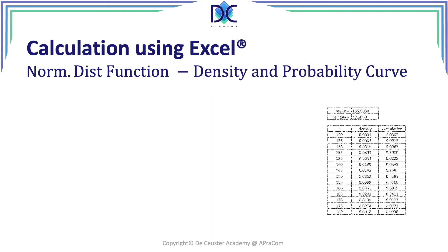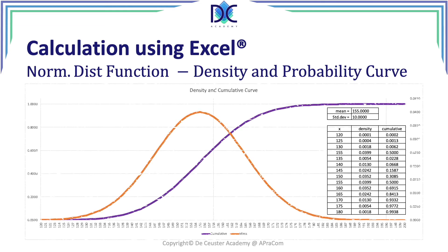Now we look at the density and the probability curve. We can calculate this for different values — I selected a mean of 155 and a standard deviation of 10, with X values going from 120 to 180. Using these formulas, I can calculate the coordinates of both the density function and the cumulative function. On the left-hand side you see the values for the cumulative curve, and on the right-hand side the values for the mass curve.